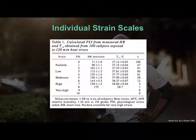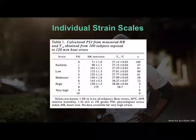A physiological strain index of 10 was not really observed in these 100 subjects exposed to 120 minutes of heat stress. This is meant to give you a sense of what a number on that physiological strain scale represents. If we are at rest with a relatively normal heart rate and a relatively normal core temperature, our PSI is zero — there's no heat strain.